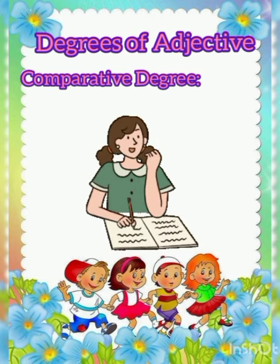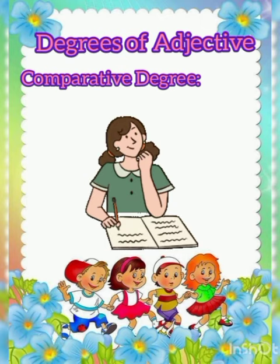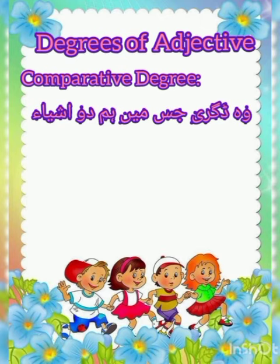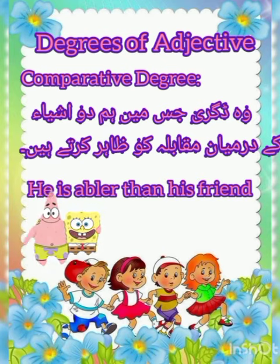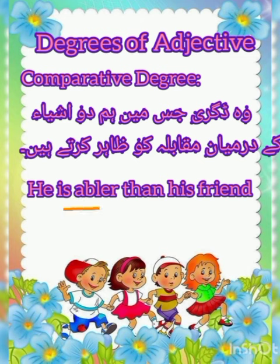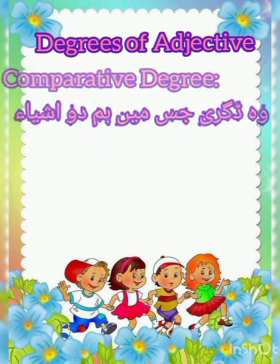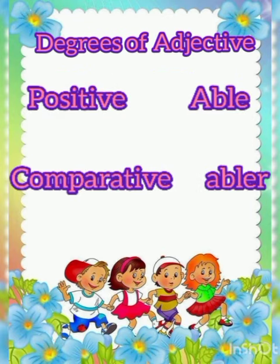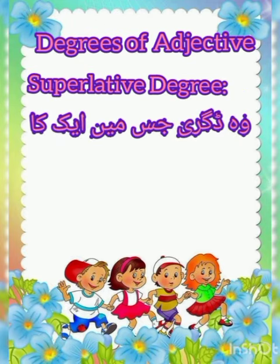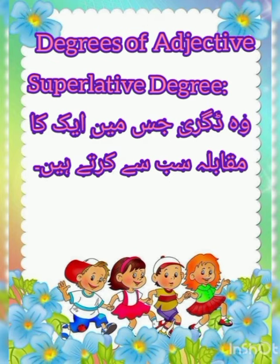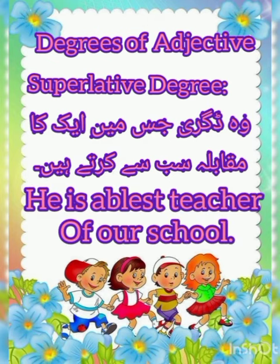Then we call comparative degree. The comparative word is compared — compare means to compare one with another. Superlative degree is a degree in which we compare one among others. For example, he is the ablest teacher of our school.